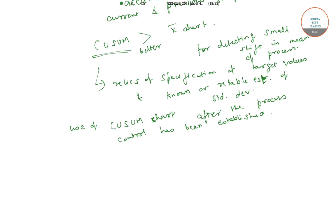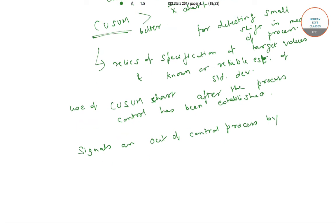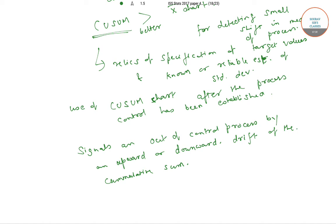This CUSUM chart typically signals an out-of-control process by an upward or downward drift of the cumulative sum until it crosses the boundary.